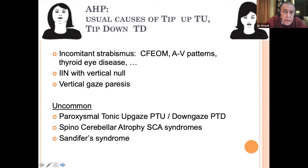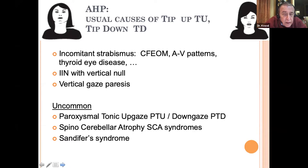For tip up and tip down, the commonest cause I see is incomitant strabismus — the congenital fibrosis syndromes, the alphabet patterns, and thyroid eye disease. Idiopathic infantile nystagmus with a vertical null, or a vertical gaze paresis, can also cause a tip. Uncommon causes of a tip include the pretty rare but difficult-to-assess paroxysmal tonic up gaze, paroxysmal tonic down gaze, the spinocerebellar atrophy syndromes in the third decade of life, and Sandifer syndrome.